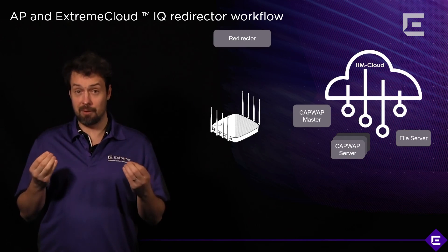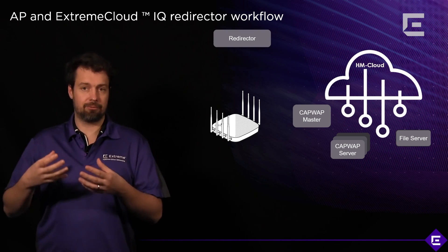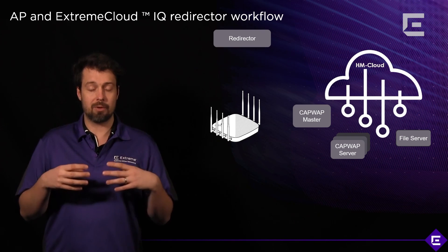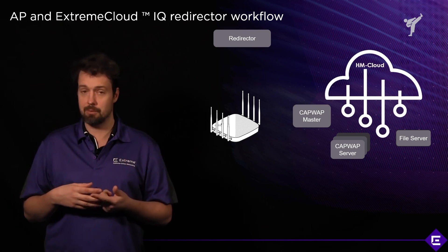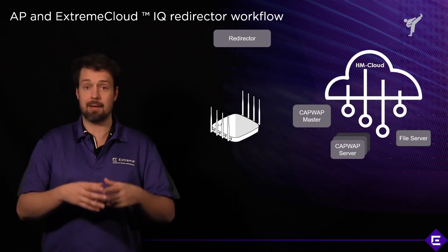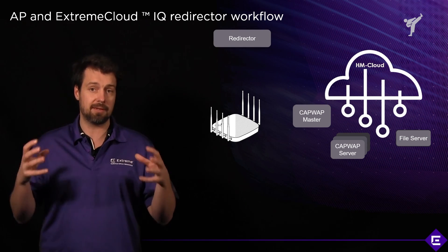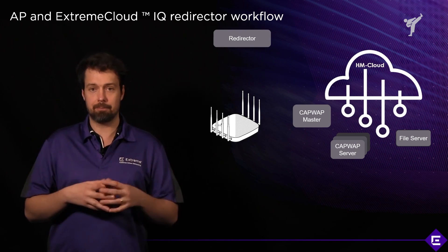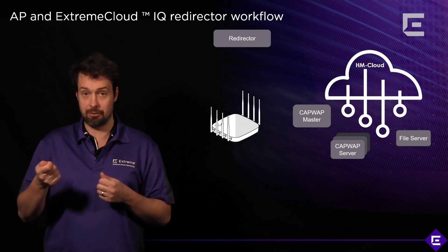Let's look at the redirector workflow in more detail. The URL or fully qualified domain name of the redirector is preconfigured in the firmware — you don't have to worry about it. The access point needs to get its IP address, default gateway, and DNS server from a DHCP server. This can be manually configured if desired, since each access point has a fully blown CLI. But in order to scale and make this as simple as possible, best practice is to use DHCP on the management VLAN where you are attaching your access points.